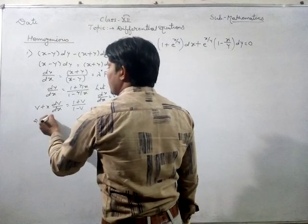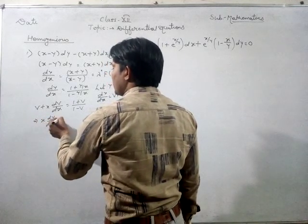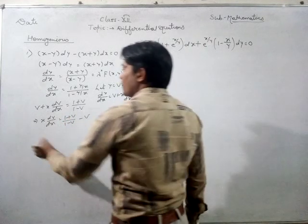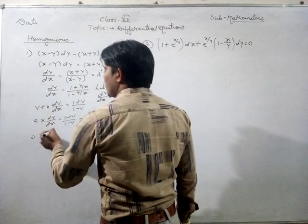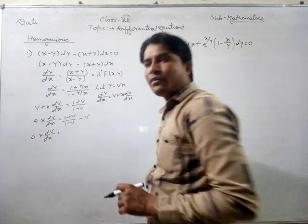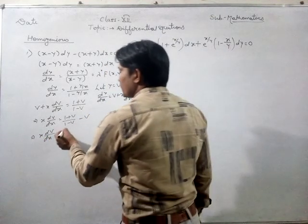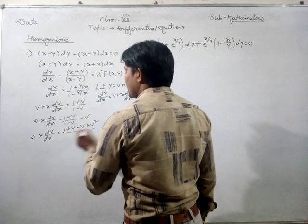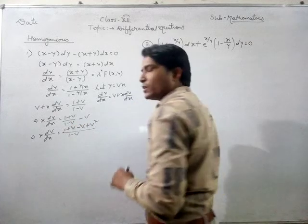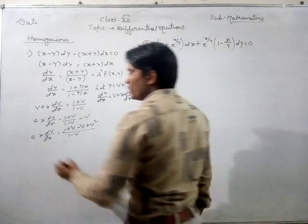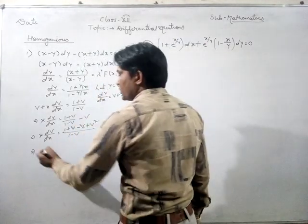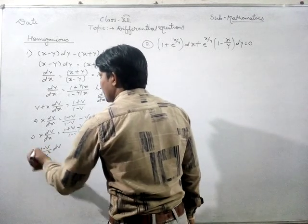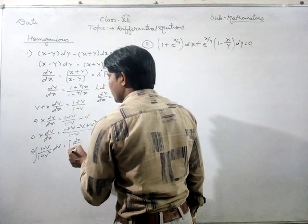After solving, x dv/dx equals (1 plus v)(1 minus v) minus v. Simplifying further, x dv/dx equals (1 plus v minus v plus v squared) divided by (1 minus v). Here the v terms cancel out. After variable separation, the equation becomes (1 minus v) upon (1 plus v squared) dv equals dx upon x.